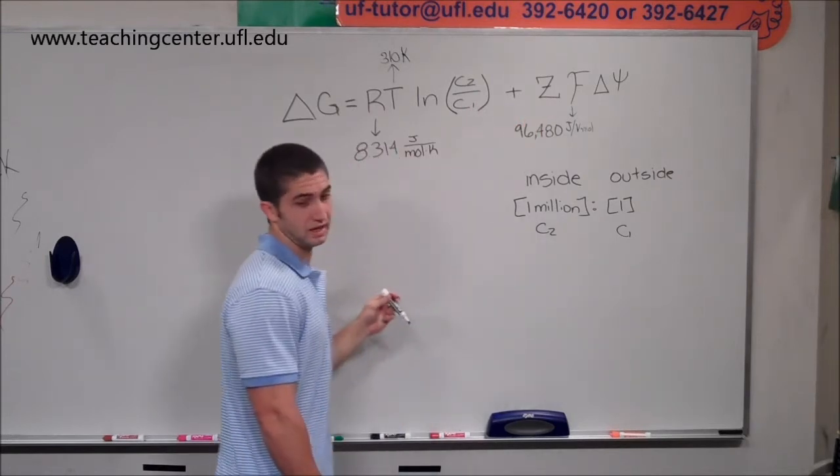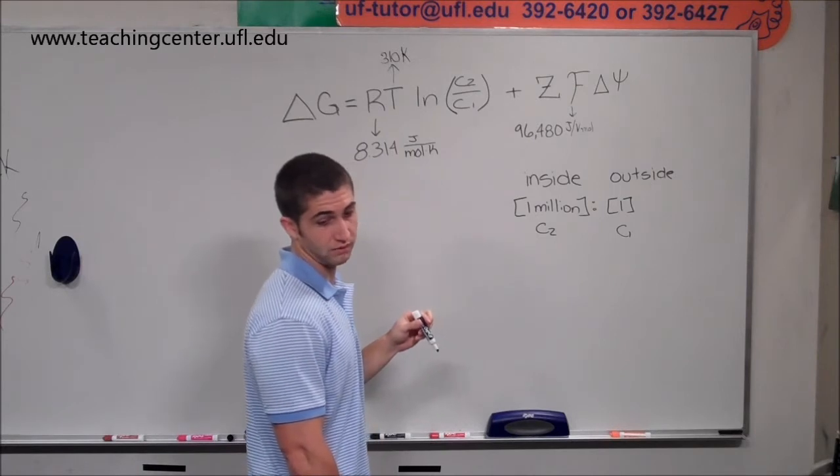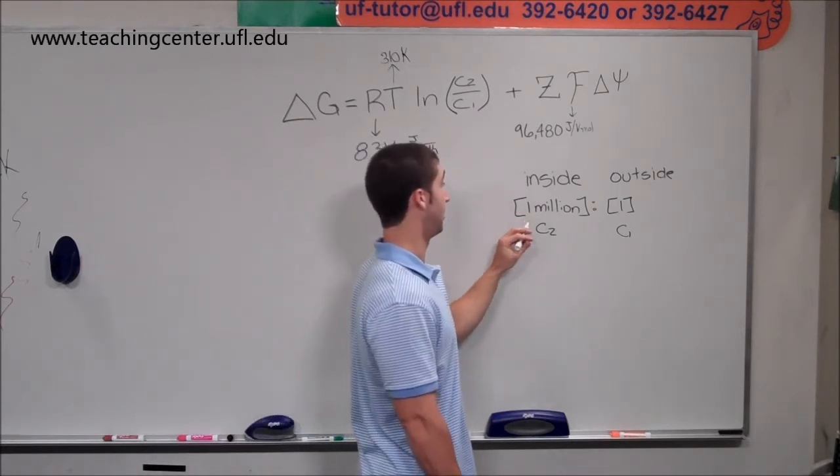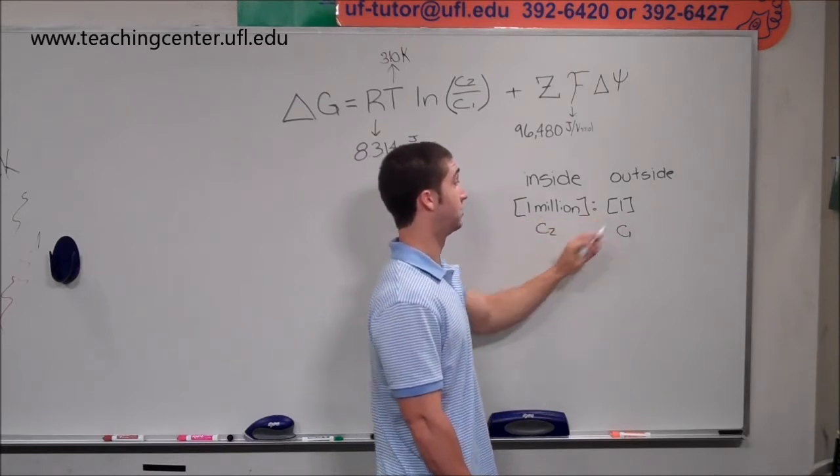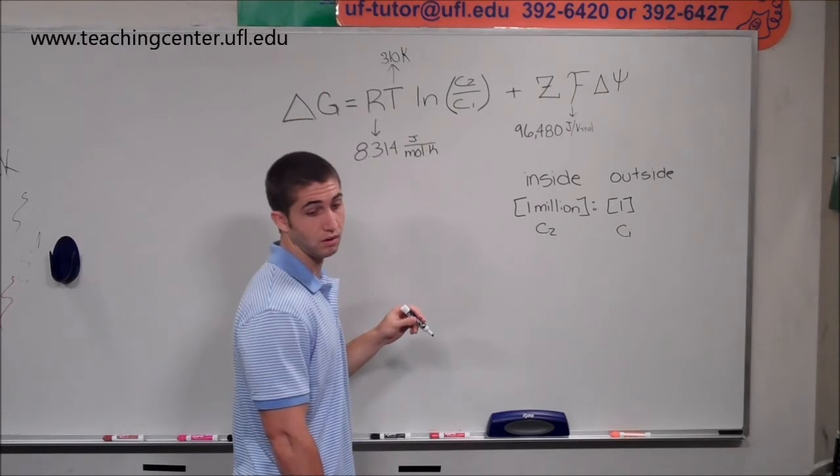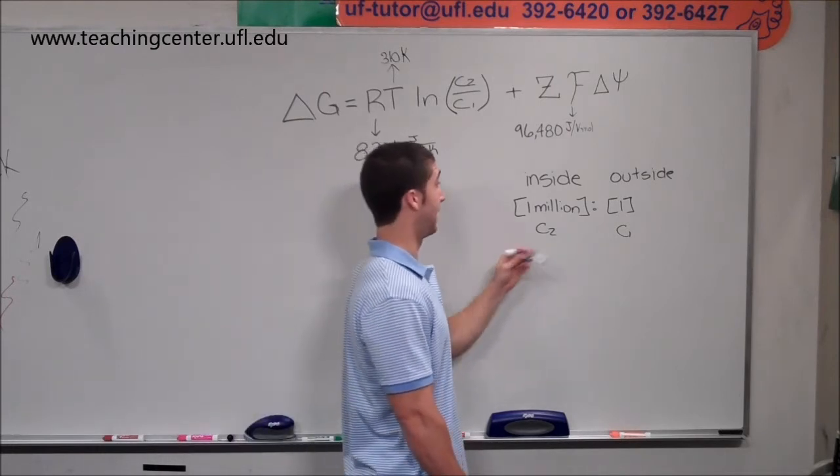So the question states that it's a million-fold comparing the ratio of phosphatidylserine inside the plasma membrane to the outside. So inside, we know that it's going to be one million to outside to one. So then they want to know what is the energetic cost of bringing more phosphatidylserines from the outside to the inside.